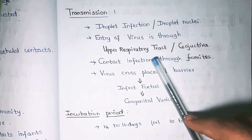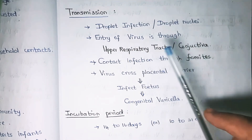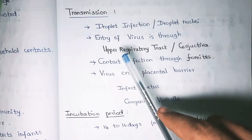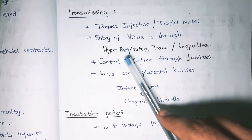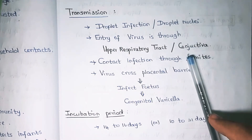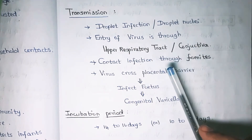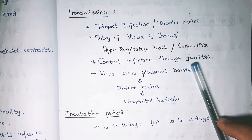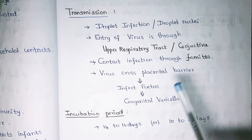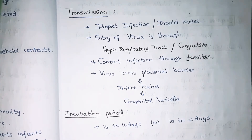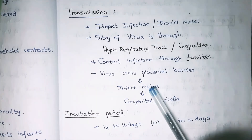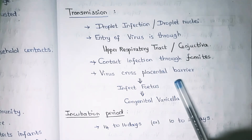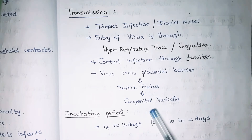Transmission is mainly through droplet infection and droplet nuclei. The entry of the virus is through the upper respiratory tract and through the conjunctiva. It can also spread through contact infection via fomites. Infected individuals should be kept separated from other household members to prevent infection.